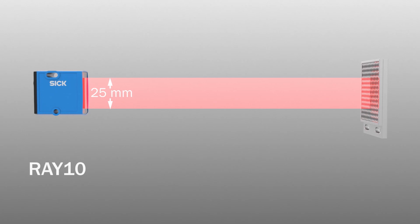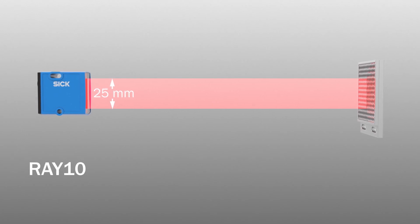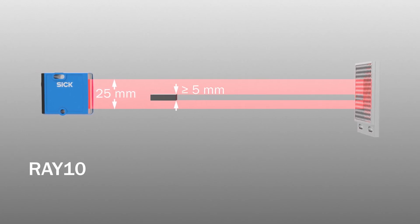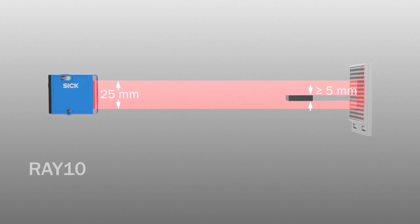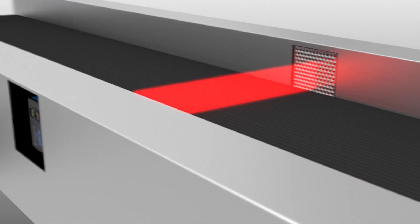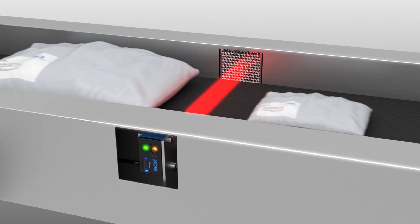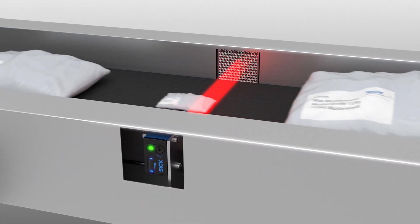The RAY10 has a detection height of 25 millimeters. Objects bigger than 5 millimeters are detected within the light band. The small housing of the RAY10 can easily be integrated into the side channel.